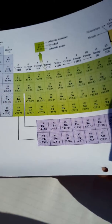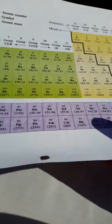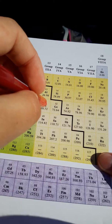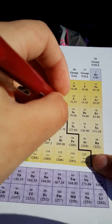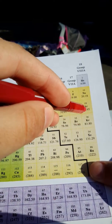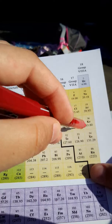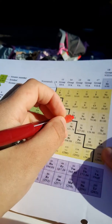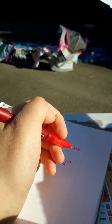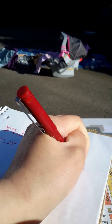We're still on the fourth row, now in the P column. We count six atoms — one, two, three, four, five, six — which is where krypton is right here, in the P block. So we write 4p6.